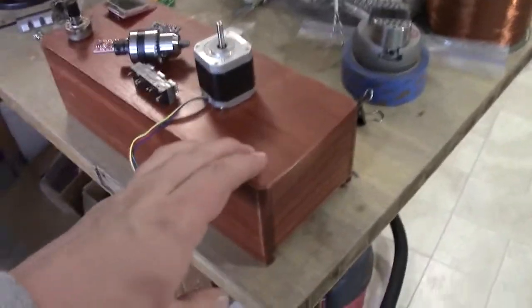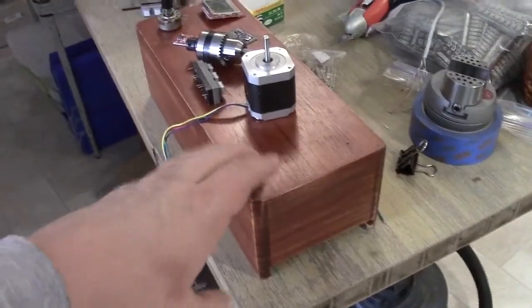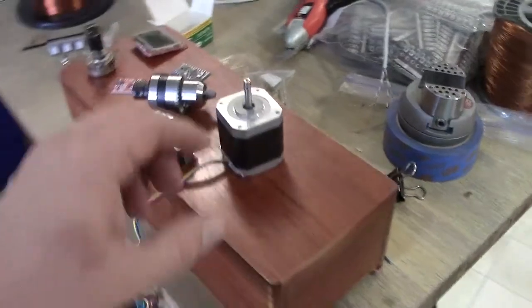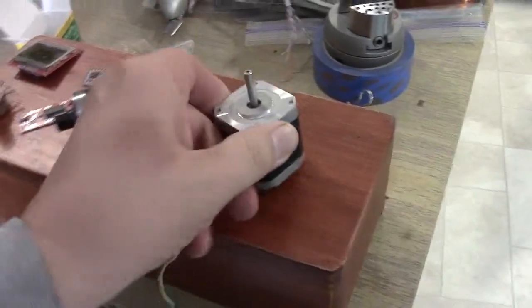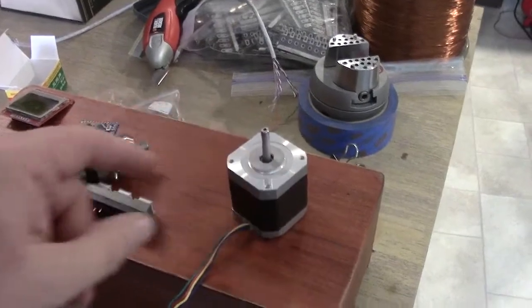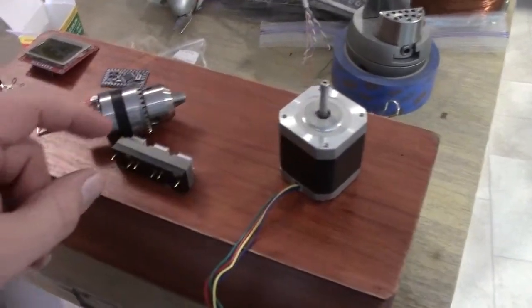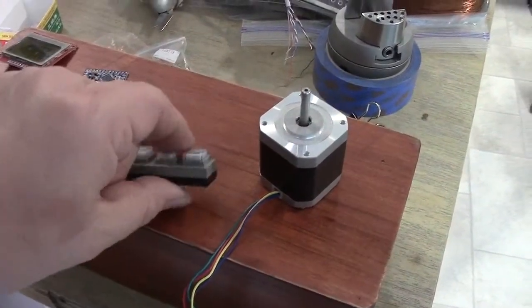I bought this little box over at Habitat for Humanity. And I got some parts up here. I have a NEMA 17 stepper motor. There's 200 steps per rotation, so that works out to be 1.8 degrees. I have a little push button switch here.